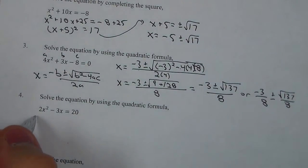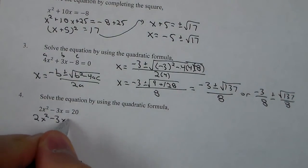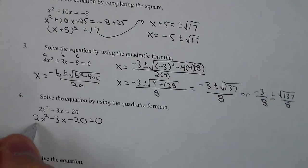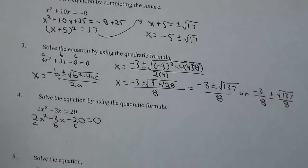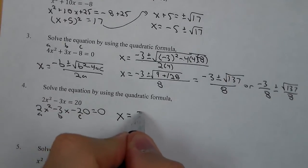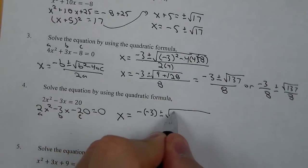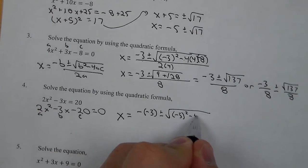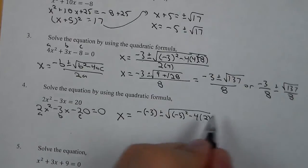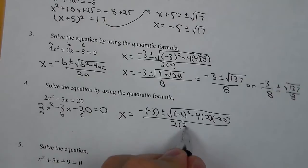Number 4: to solve using the quadratic formula, we first have to subtract the 20 over to the other side. Then we have a, b, and c. We set it up the same as before: we have negative negative 3, then negative 3 squared. A is 2, c is negative 20, and that's over 2 times 2.